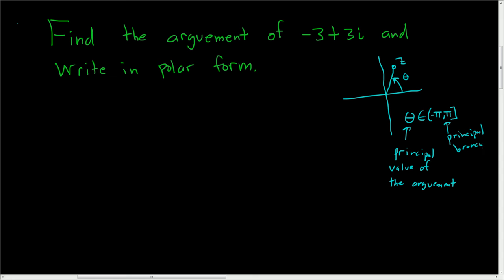Why is it called the principal one? Well, let's focus on the value of the argument. Once you get to this angle you can add 2π and get right back to it. You can also subtract 2π and go the other way. You can add 4π, 10π — any multiple of 2π — and you get the same angle. So we use this notation, capital Arg(z), to denote the value of theta that lives in the interval negative pi to pi.